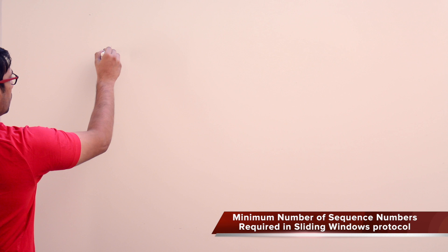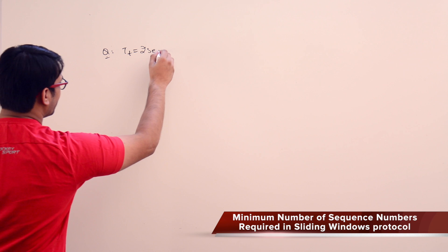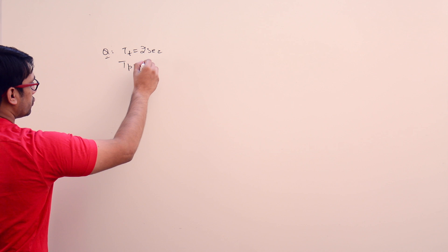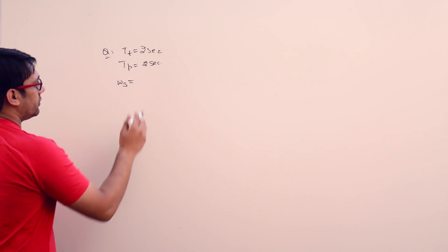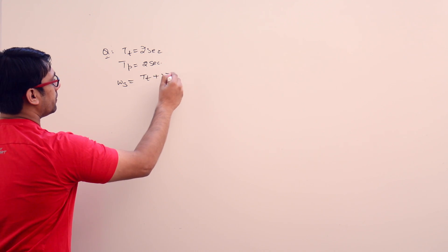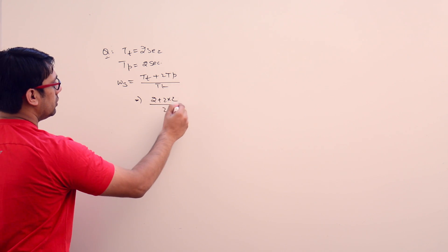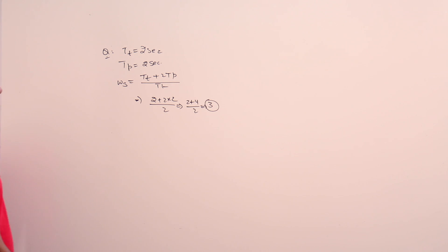Assume this particular scenario: the transmission time is 2 milliseconds and the propagation time is also 2 seconds. What should be the window size in case of sliding window protocol? The window size should be TT plus 2 into TP upon TT, which is equal to 2 plus 2 into 2 upon 2, which equals 2 plus 4 upon 2, which is 3. So the window size should be 3 to get 100% efficiency in this case.